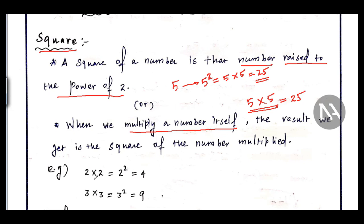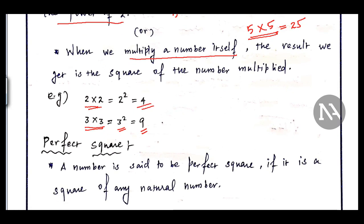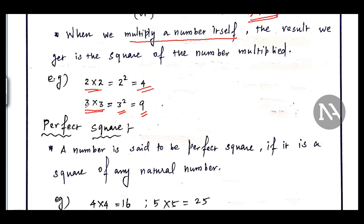In simple words, square of a number means when we multiply a number by itself. For example, 2 into 2 is 4, and 3 squared equals 9. The number has been multiplied with itself — that is, the power of the number is increased to 2.